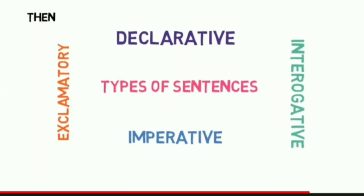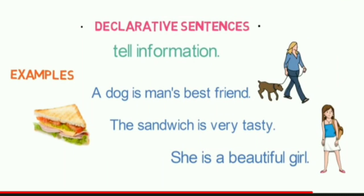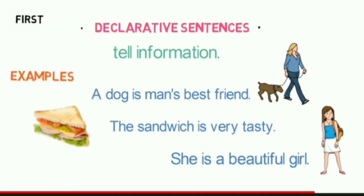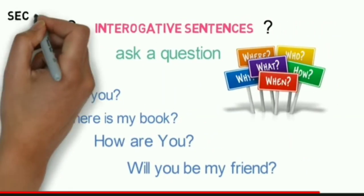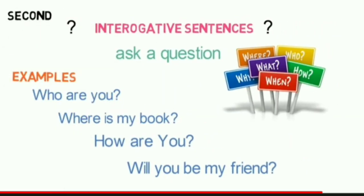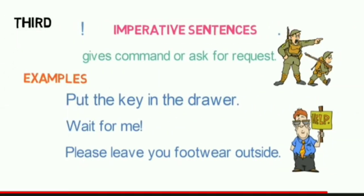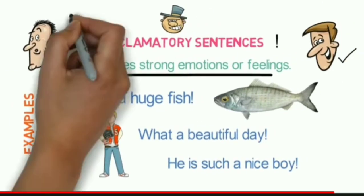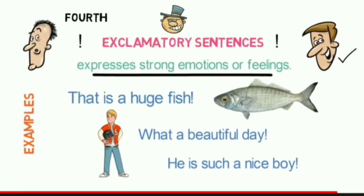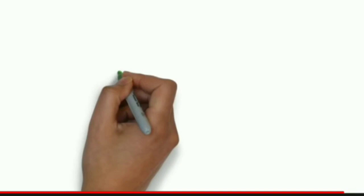We discussed four types of sentences: first, declarative sentences — which give information and end with a period; second, interrogative sentences — used to ask questions and end with a question mark; third, imperative sentences — which give commands or requests and end with a period or exclamation mark; fourth, exclamatory sentences — which express strong feelings or emotions and end with an exclamation mark.